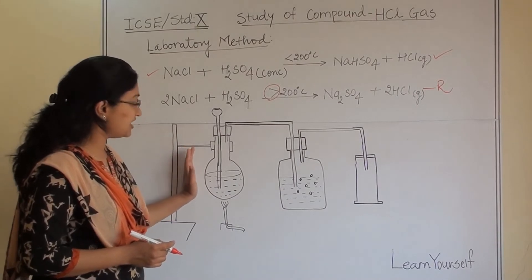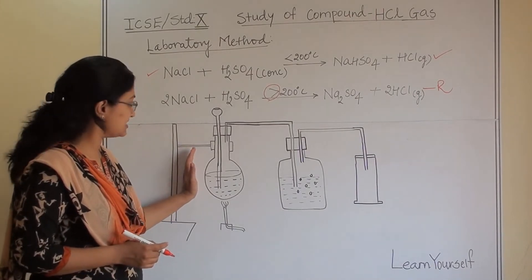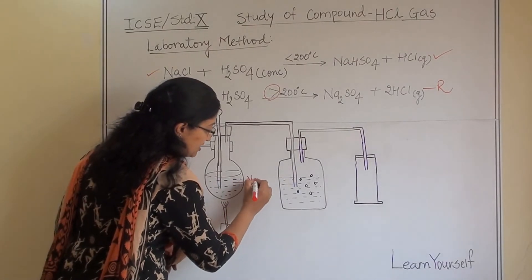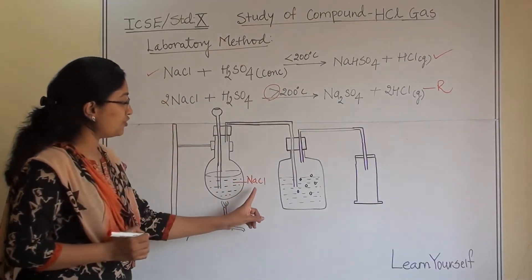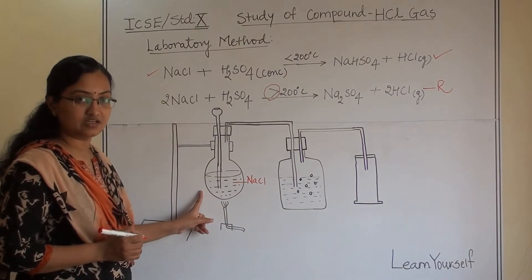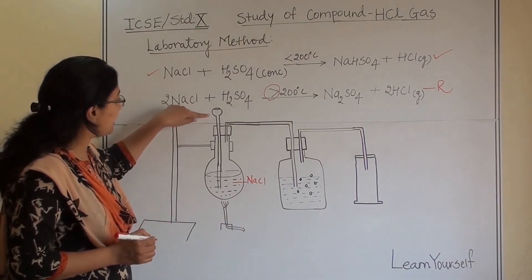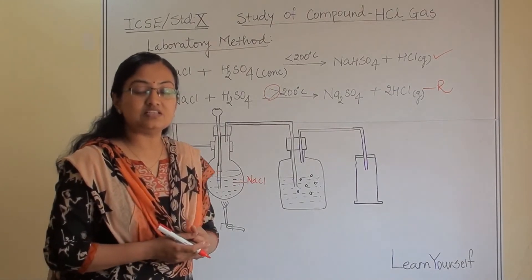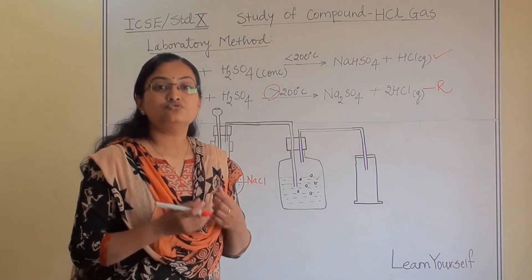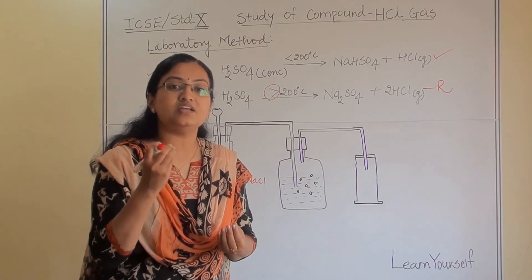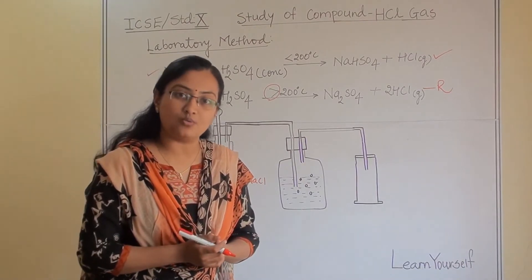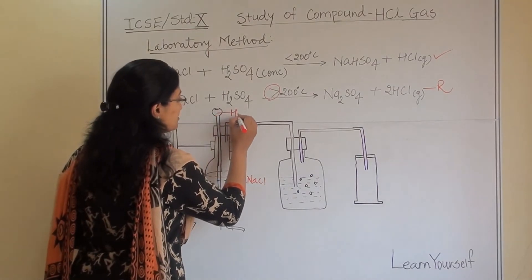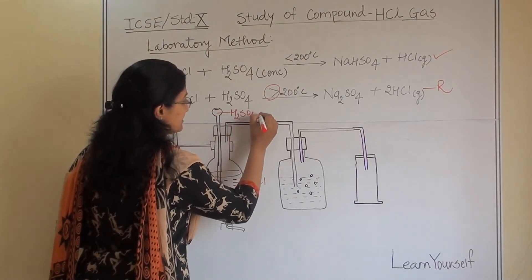In this setup we have taken one round-bottom flask with a sodium chloride solution. We have arranged a thistle funnel — the thistle funnel is used to add any liquid in a dropwise manner to our reaction. In this funnel we are adding concentrated sulfuric acid, which is concentrated — and it is very important to mention that.